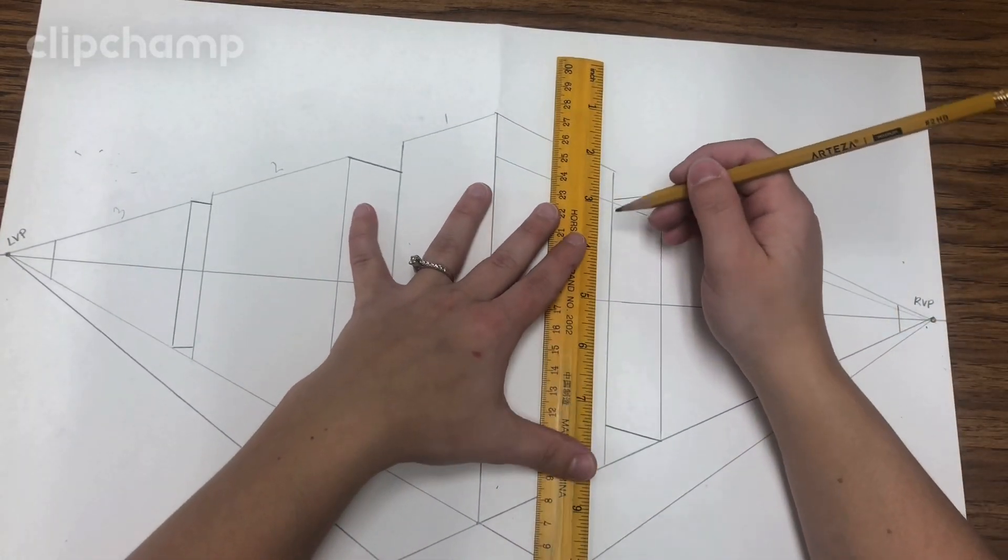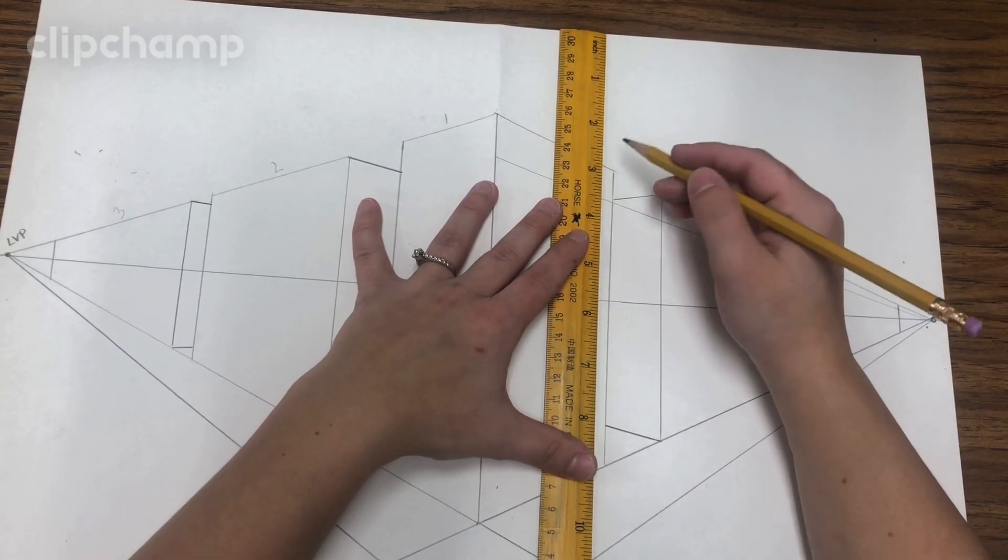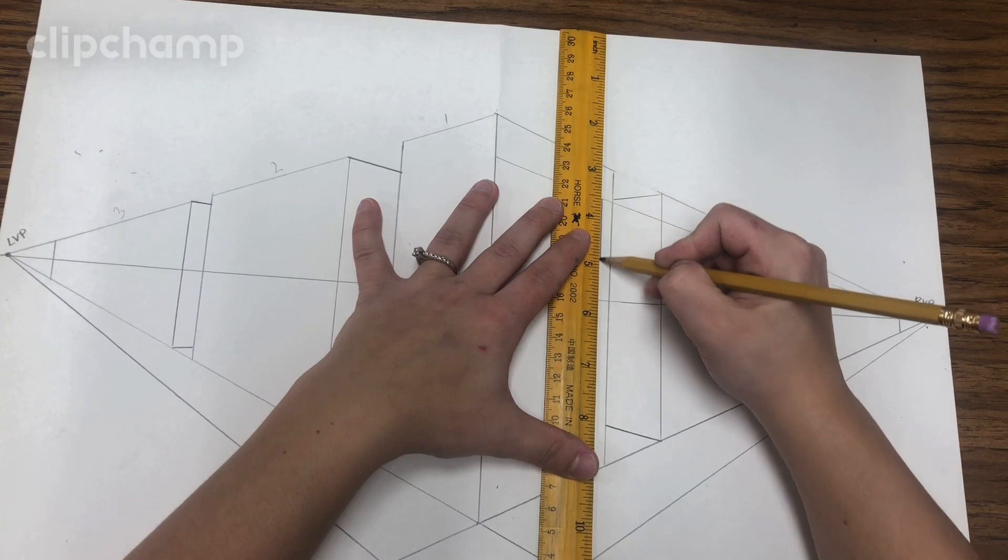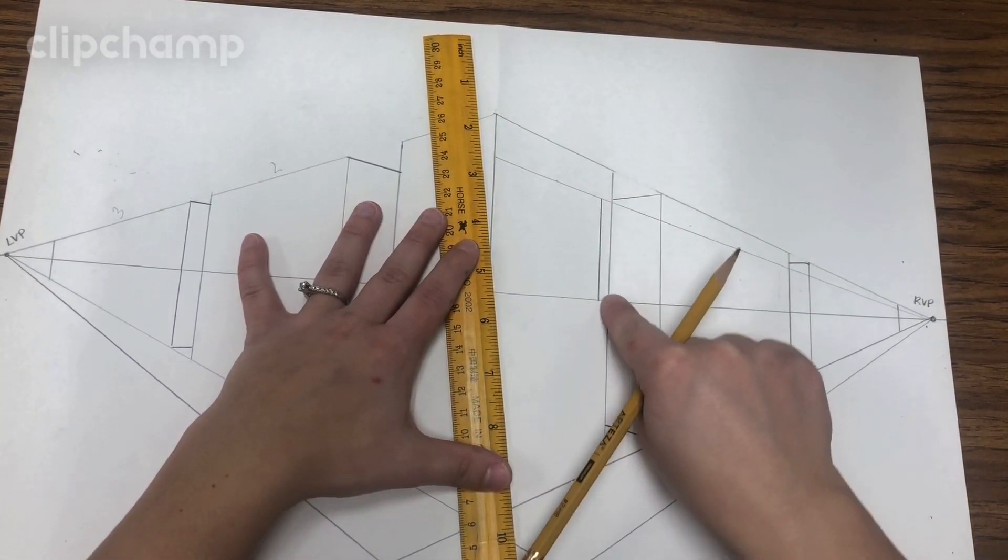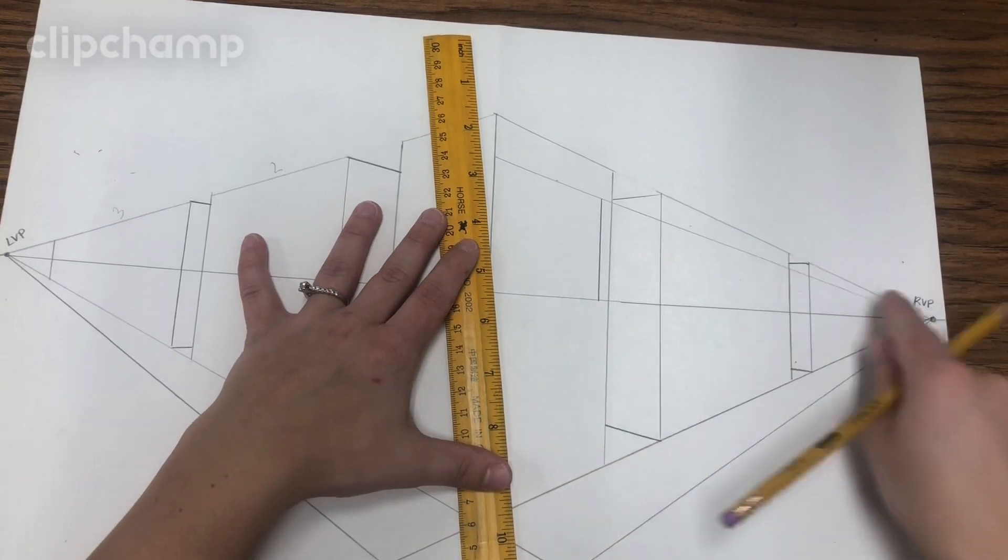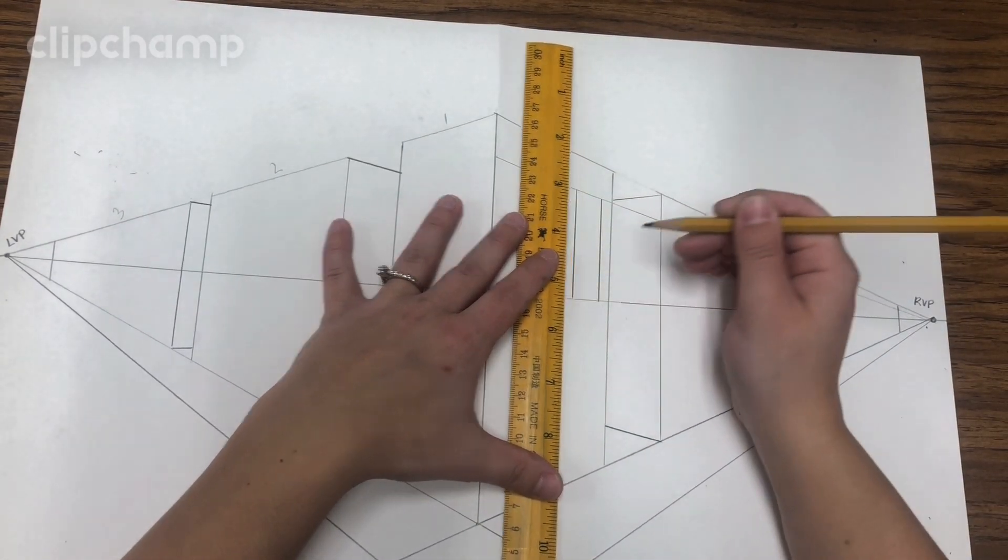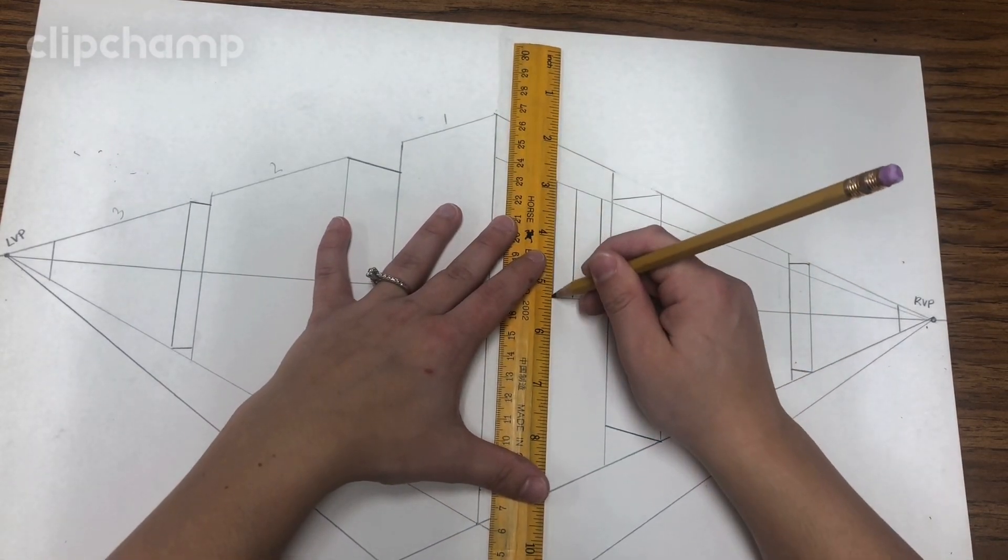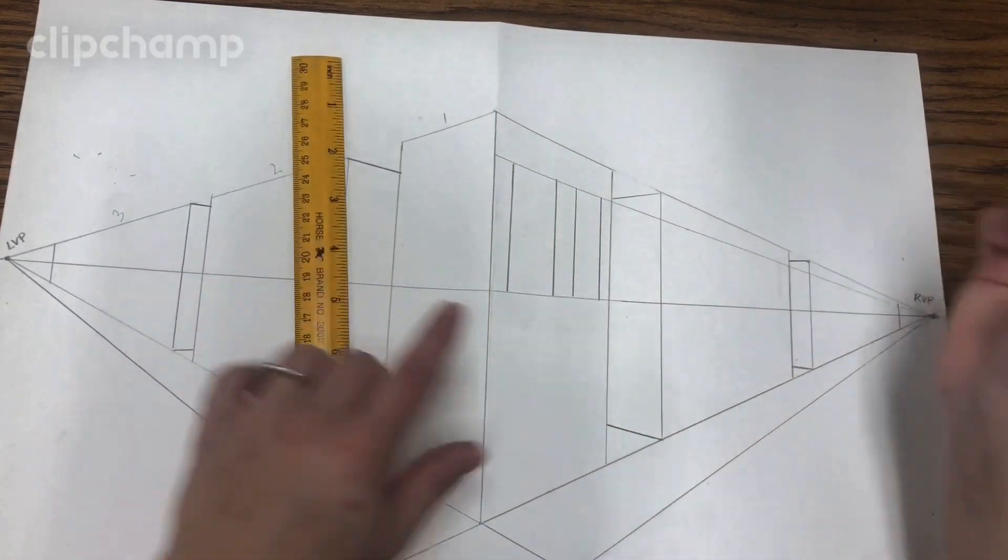I'll take my ruler, and I can eyeball it or I can line it up to the edge. And I'm going to draw a line that comes down between those two lines. My horizon line and the top of the line I just made. I'm going to draw another line that comes down, space it out again, and then draw another one. So all together I'm drawing four lines.